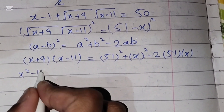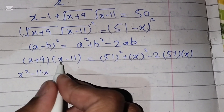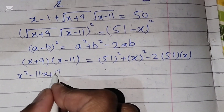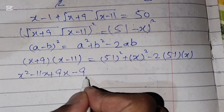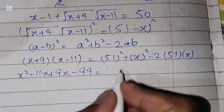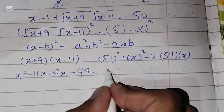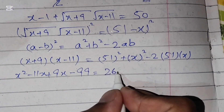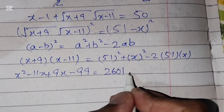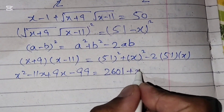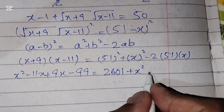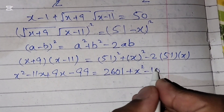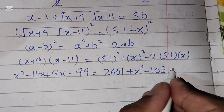Expanding the left side: x² - 9x + 9x - 99, and 51² = 2601, so we have x² - 99 equals 2601 + x² - 102x.